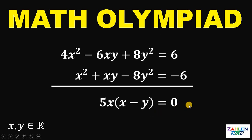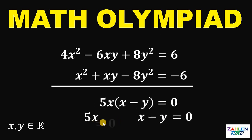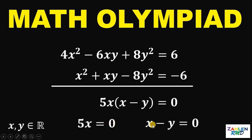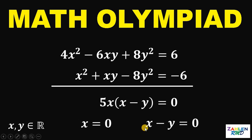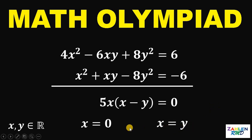Since it is equal to 0, at least one of the factors must be equal to 0. So we can say that 5x equals 0 or x minus y equals 0. From the first factor, 5x equals 0 means x equals 0. From the second factor, x minus y equals 0 means x must be equal to y. So we have two cases: Case 1, x equals 0, and Case 2, x equals y.